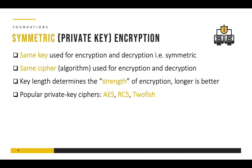Symmetric encryption is also called private key encryption and it uses the same key for encryption as well as decryption. That is why it is called symmetric — because the same key is used both at the source and at the destination. It also uses the same cipher. A cipher is a word which is an alternate for algorithms, used for encryption and decryption.